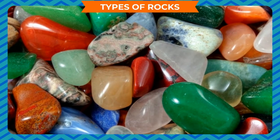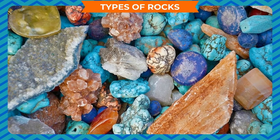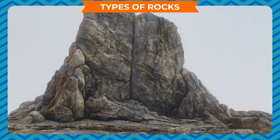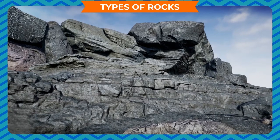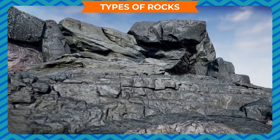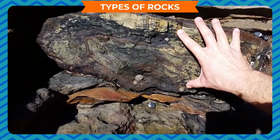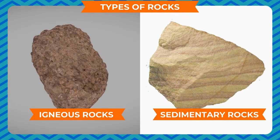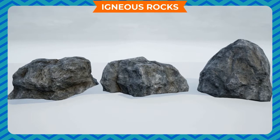Types of rocks. Rocks are made up of two or more minerals, so the quantity and quality of minerals and their arrangement in a particular rock decides the kind of rock it is. Rocks are mainly classified into three broad categories depending on their formation: igneous, sedimentary, and metamorphic rocks.